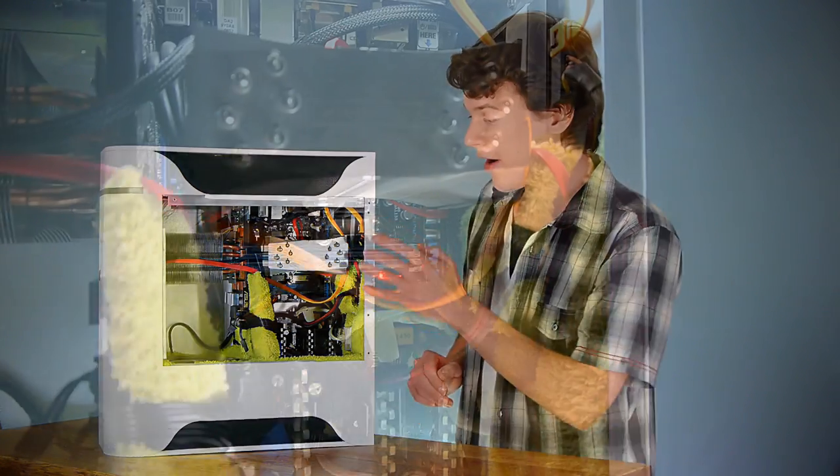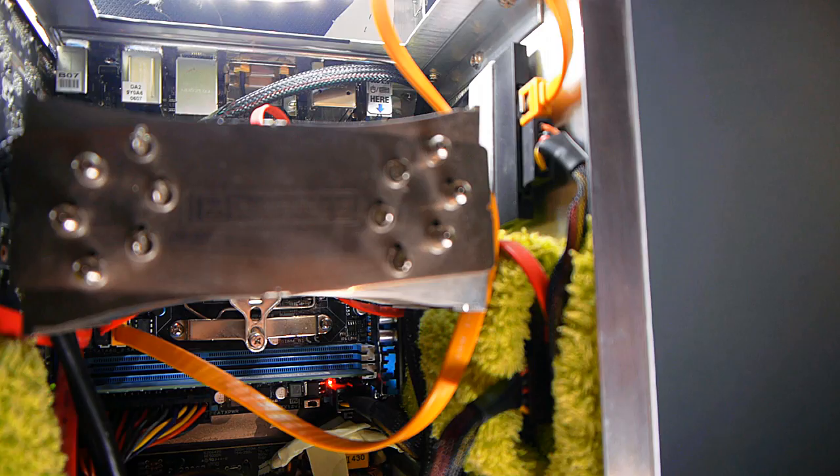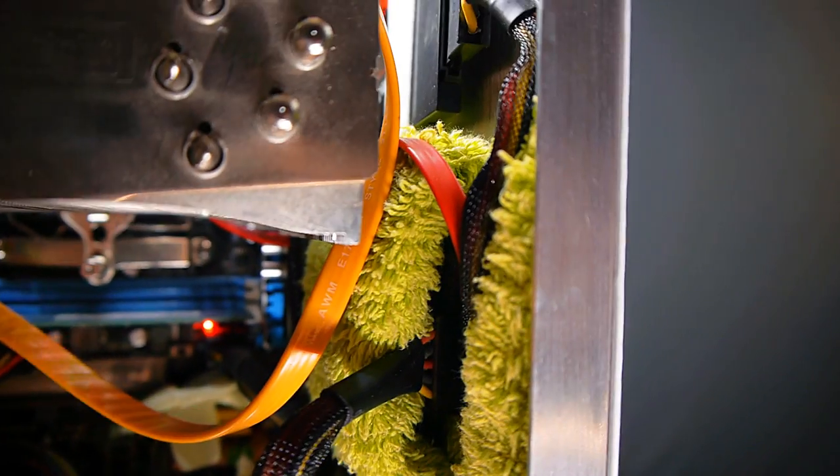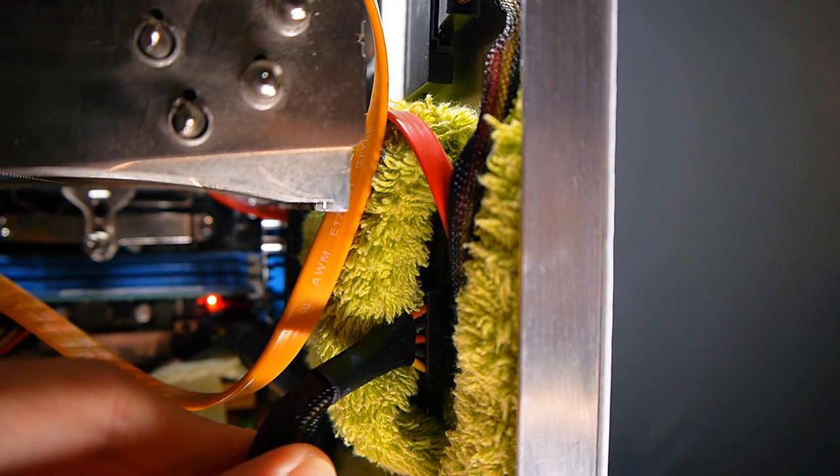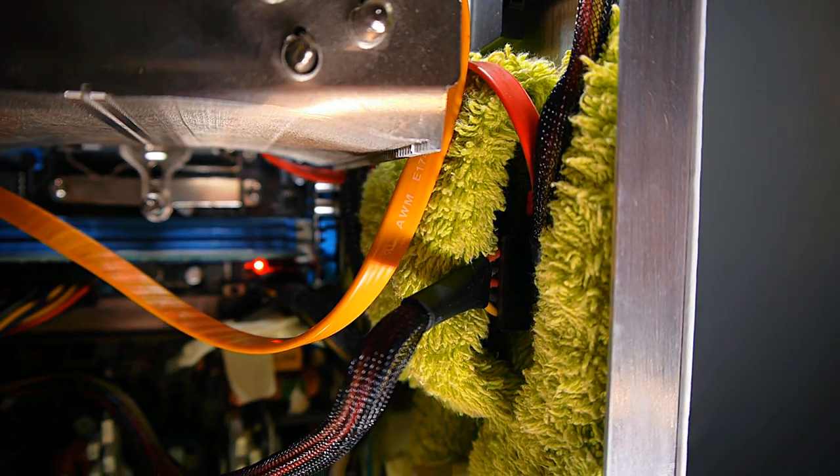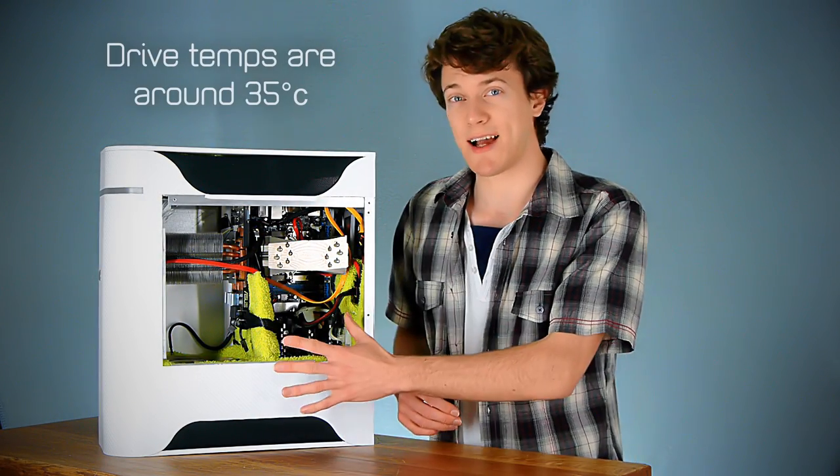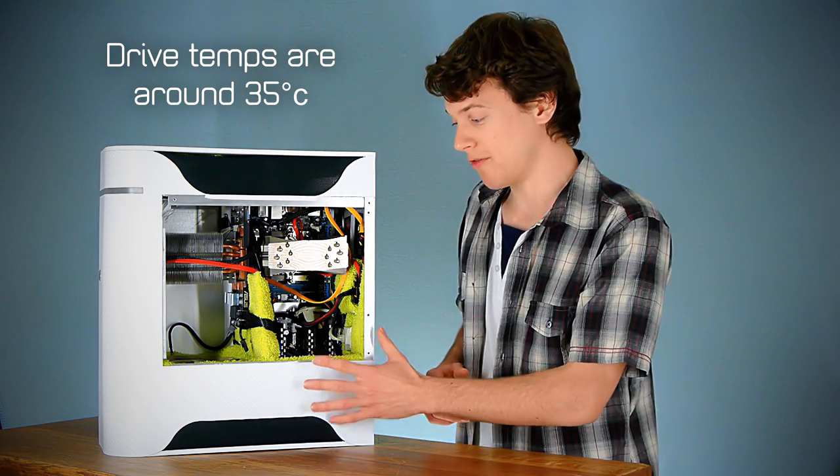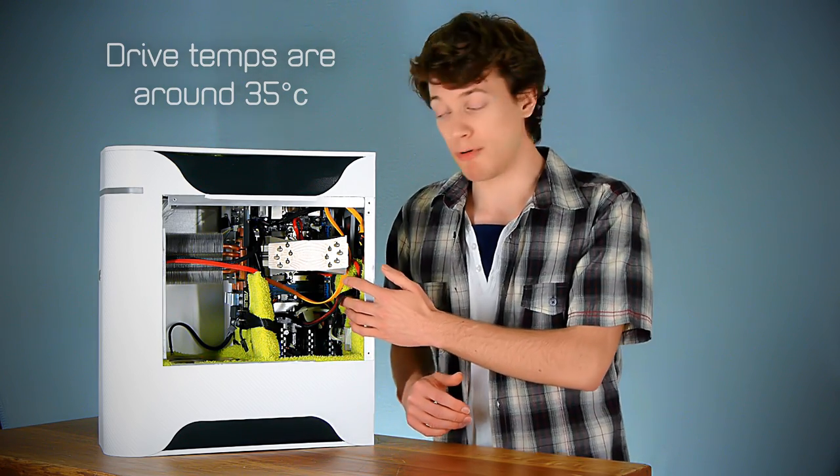The hard drives are here at the back. The data drive, which is a 2.5-inch laptop hard drive, is in a pocket made out of this same fabric, and that's for the exact same reasons of absorbing its noise and vibrations.